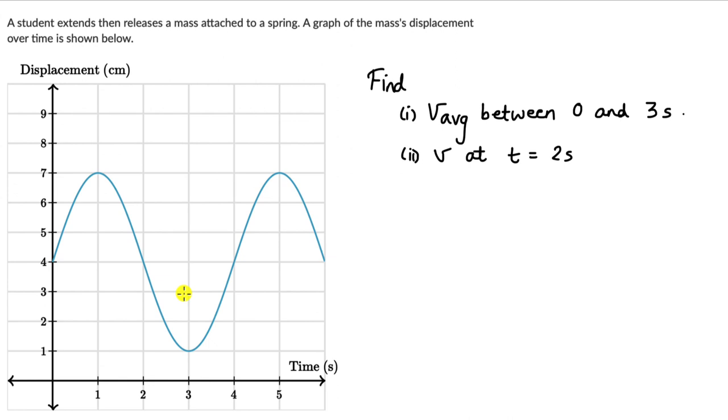Alright, let's first look at the average velocity. From what we know, average velocity is equal to Δx divided by Δt.